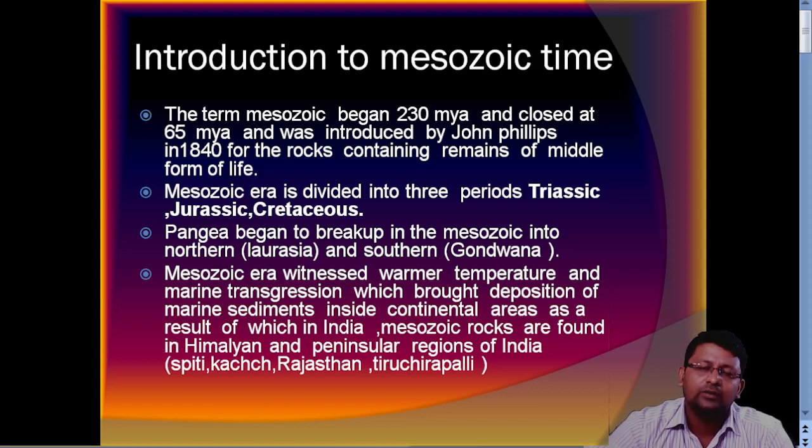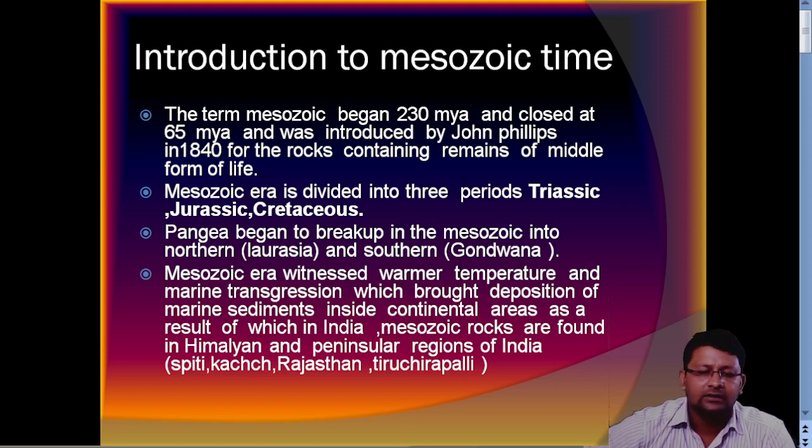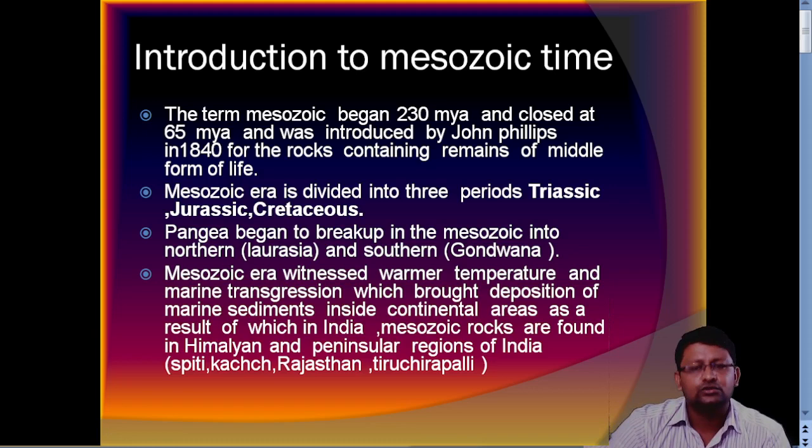This era saw some important events. First, Pangea, the large landmass, broke down into two parts: the northern part Laurasia and the southern part Gondwana. The Mesozoic era also witnessed warmer temperatures — the temperature was warmer at that time.